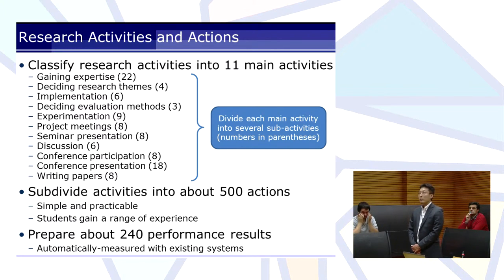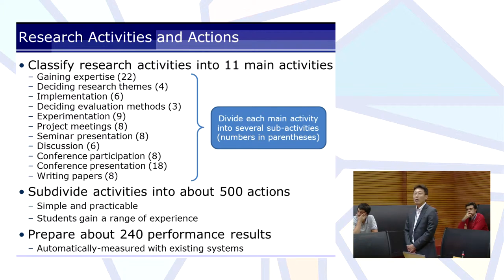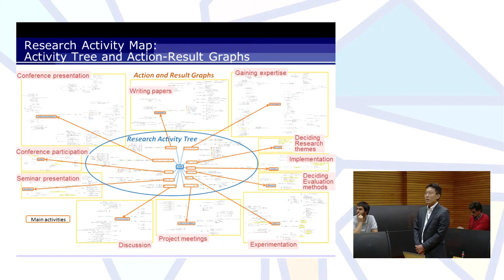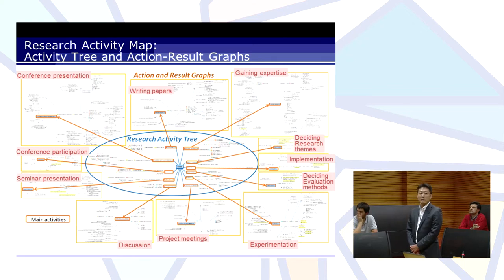Students gain a range of experience of research activity by setting and moving into actions according to issues and tasks. We also prepare about 240 performance results for measuring automatically with existing systems and evaluating statistically the status of practice of target actions. This figure shows three structures of research activities, which we call the research activity map. The center figure is a research activity tree including main and sub-activities, and the surrounding figures show graphs of actions and results according to each main activity.